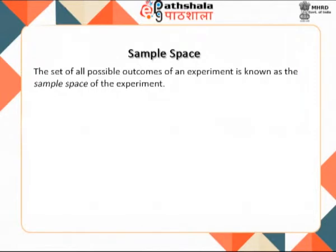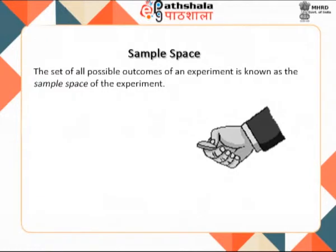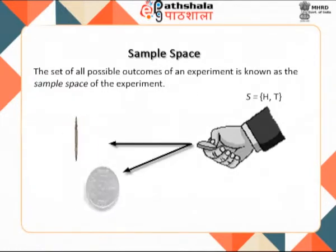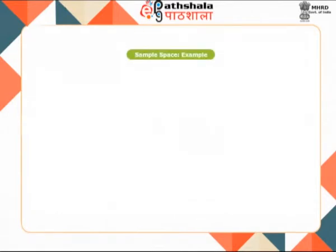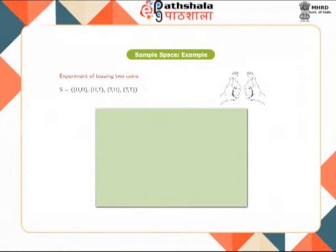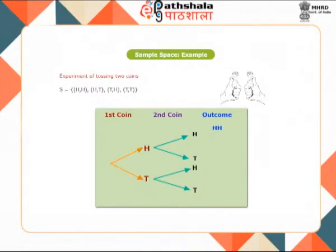Take for example the experiment of tossing a coin. This experiment has two possible outcomes: heads and tails. Thus, H and T, which denote heads and tails respectively, form the sample space of the experiment of tossing a coin. If an experiment consists of flipping two coins, then the sample space would include four cases: HH refers to heads on both coins, TT to both tails, HT to heads on the first and tails on the second, and TH to tails on the first and heads on the second.